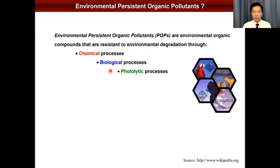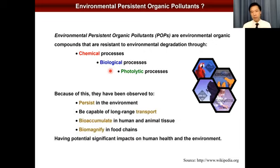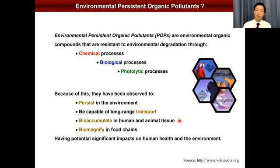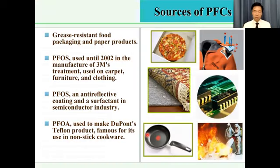The problem of persistent environmental pollutants is of great concern in environmental science because this type of pollutant can resist chemical degradation, biological degradation, and photo-degradation processes. They stay in the environment for a really, really long time. When a pollutant persists in the environment, it can be transported over very long distances without being destroyed, accumulate in human and animal tissue, and very easily enter the food chain through what we call biomagnification.